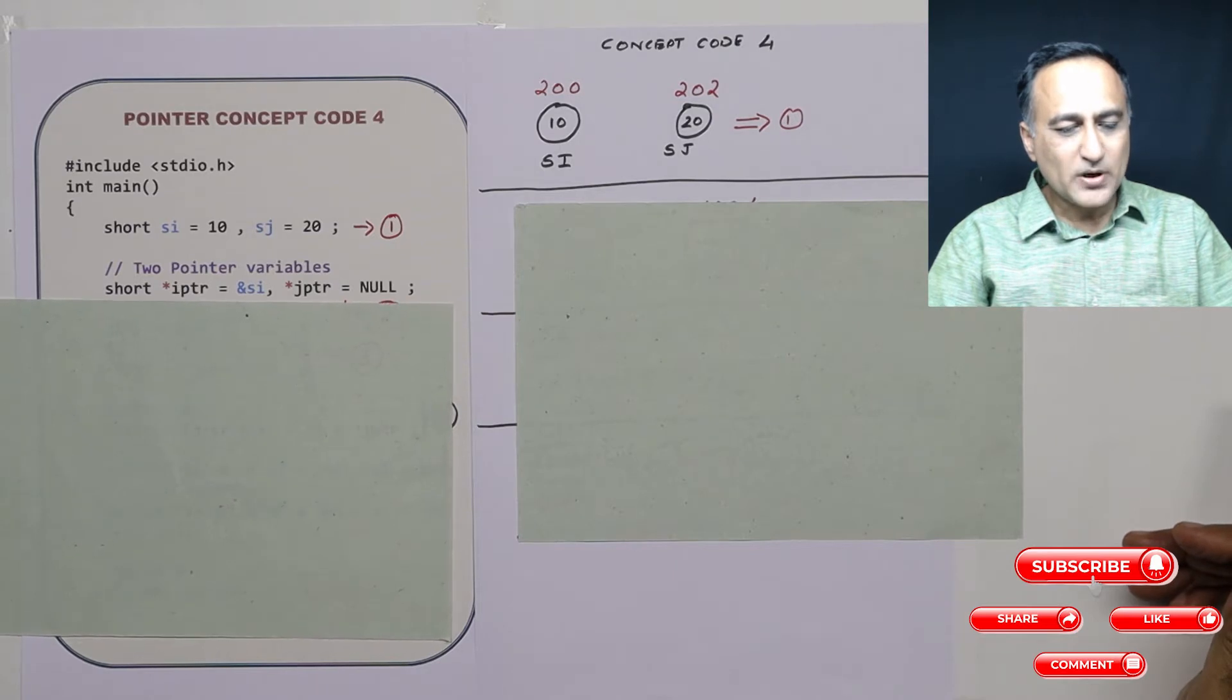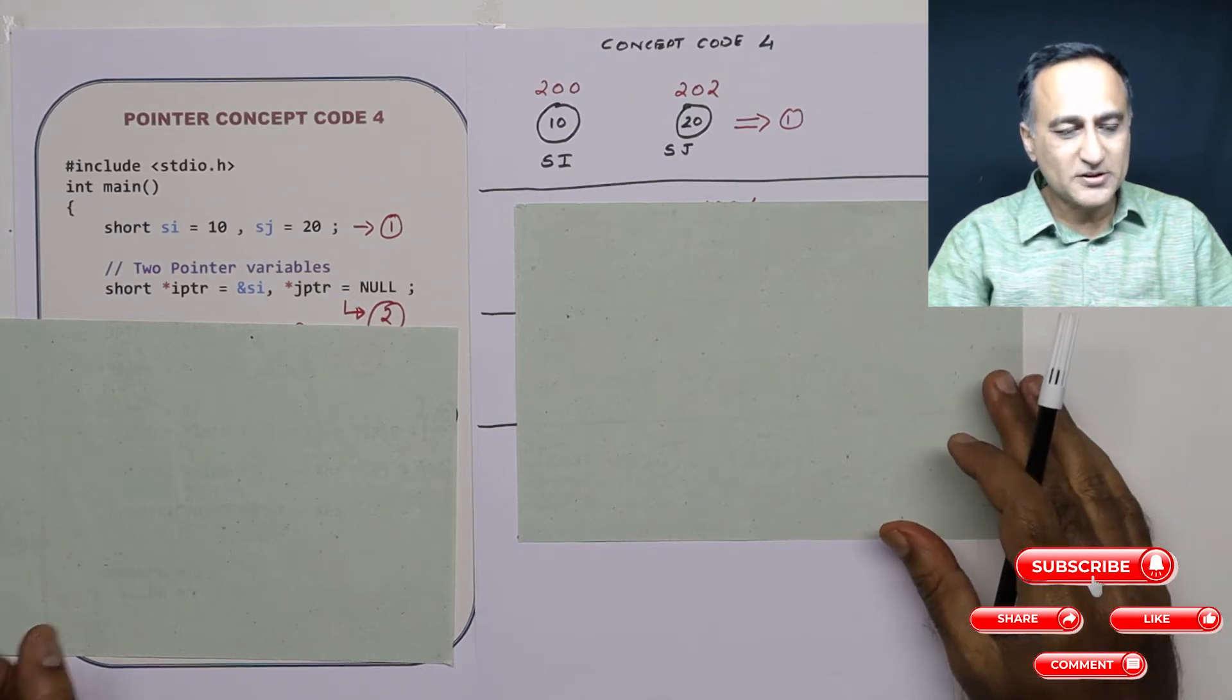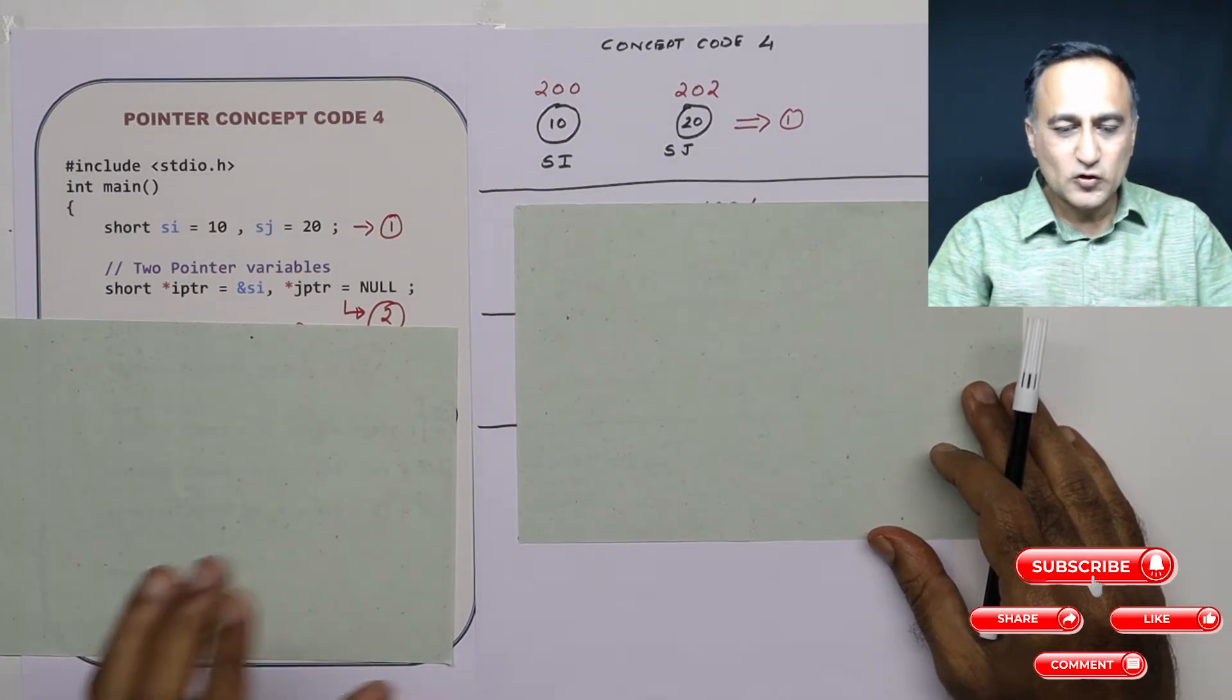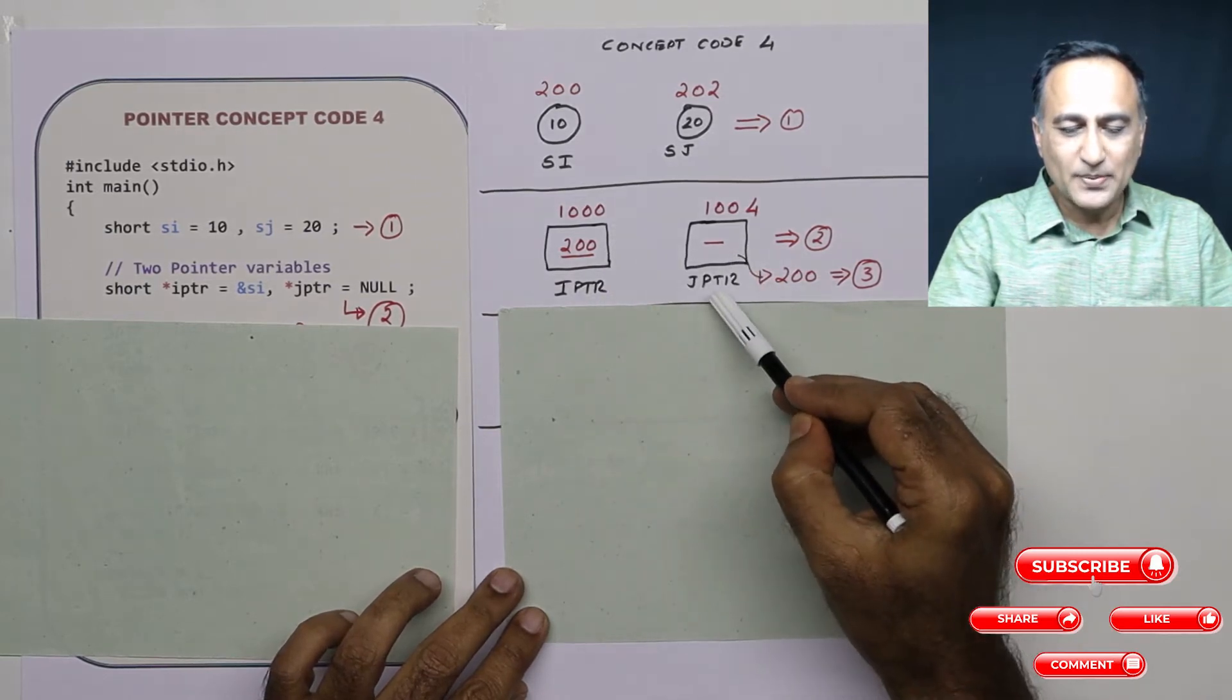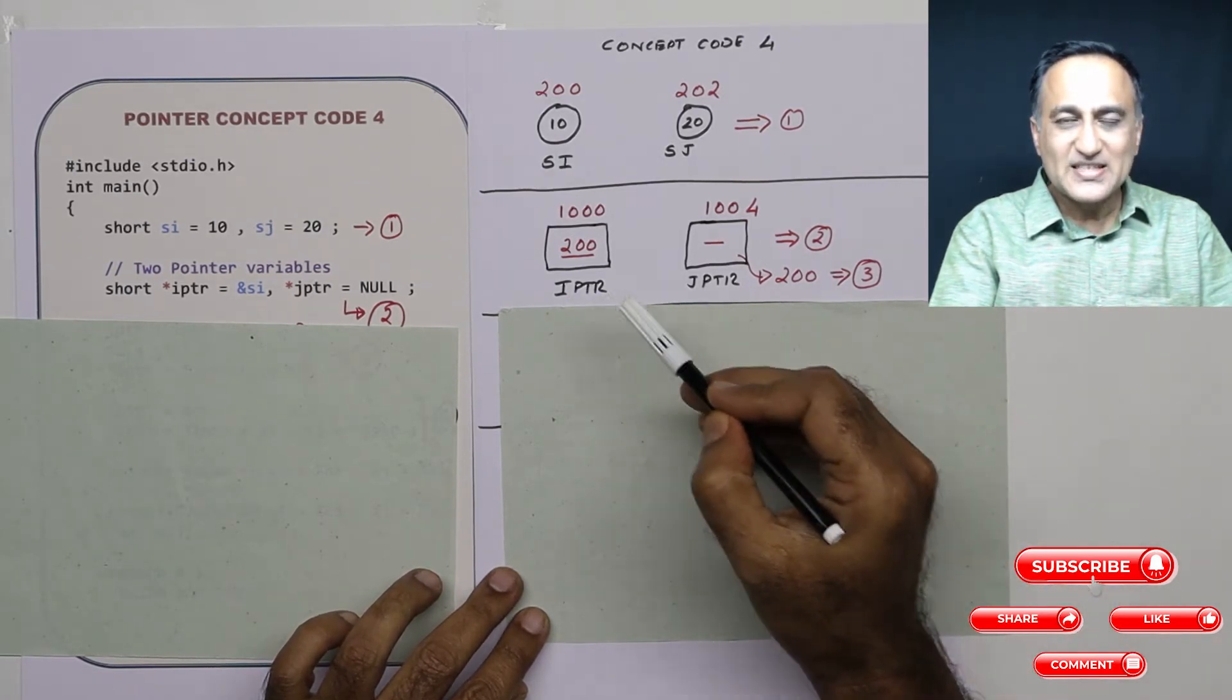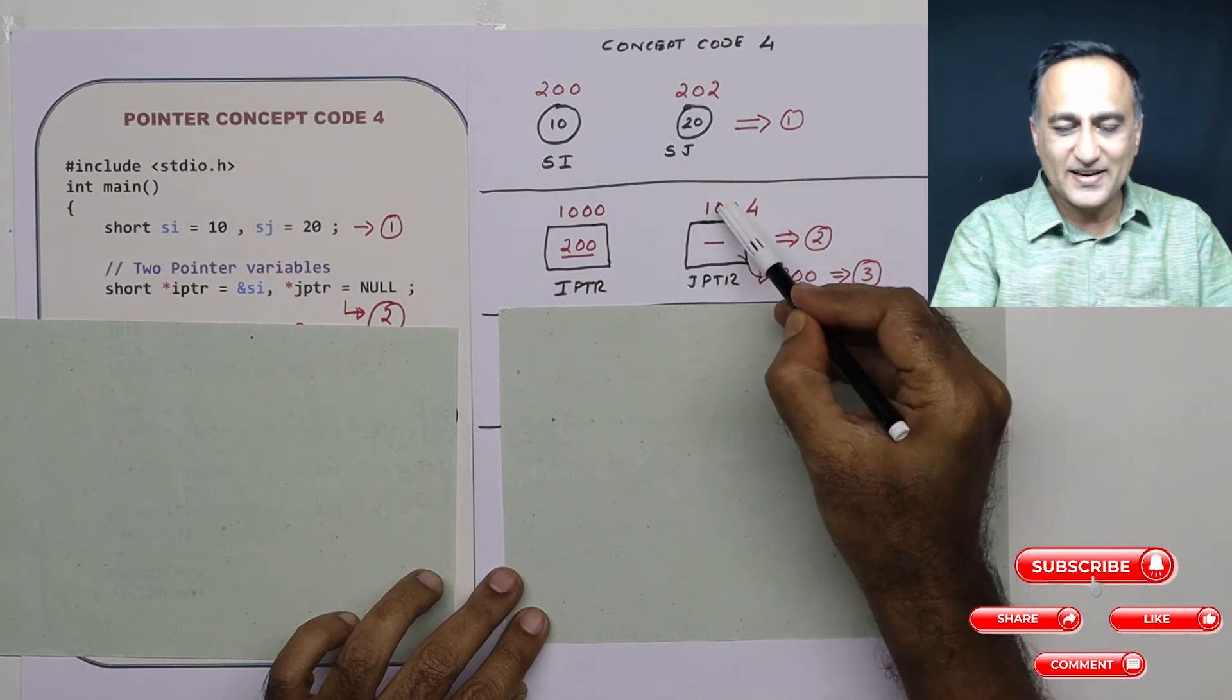In the next step what I am trying to do here is I have declared two variables which can hold addresses. So these variables are known as pointer type variables. The first is IPTR and the next is JPTR. So first let's draw the variables. So this square box represents IPTR. This square box represents JPTR. I am assuming IPTR since it's a variable it exists at address 1000 and JPTR also being a variable exists at address 1004.